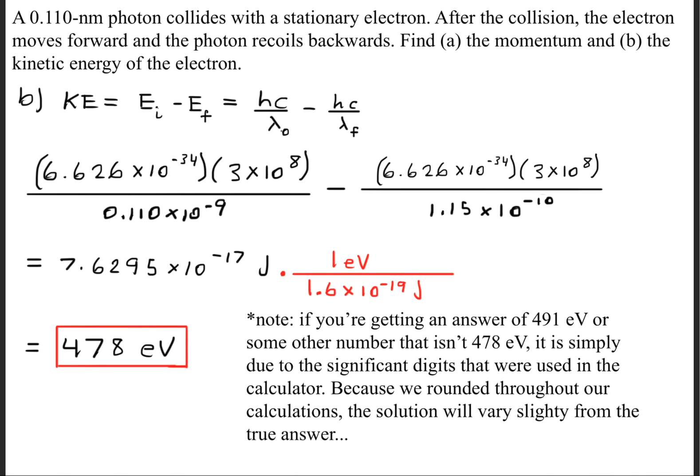Now, just a quick note right here. If you're getting an answer of 491 electron volts, because I've punched this into the calculator and I've gotten that number as well, or if you're getting some other number that isn't 478 electron volts, it is simply due to the significant digits that were used in the calculator. Because we rounded throughout our calculations, the solution will vary slightly from the true answer.